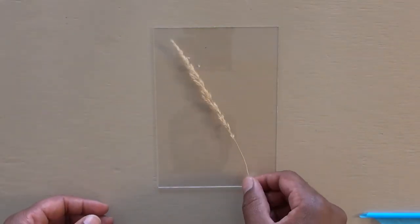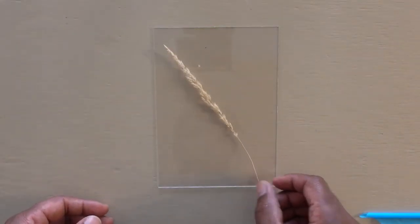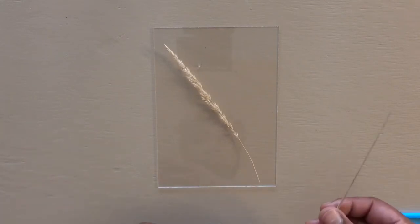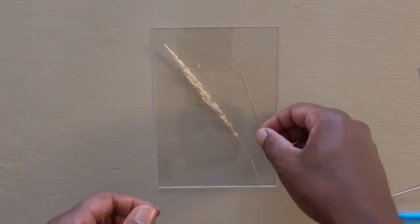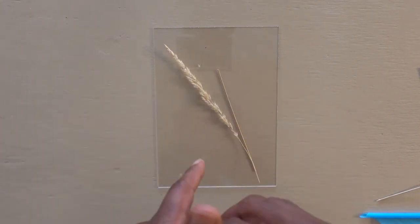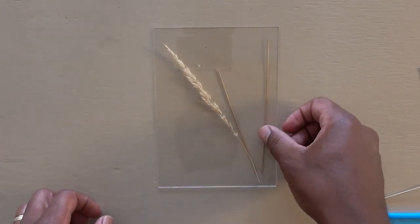Next we're going to compose our organic materials and found objects on top of the plexiglass. The plexiglass provided is exactly the same size as the paper so I like to arrange my materials and composition on the plexiglass so I don't waste anything.